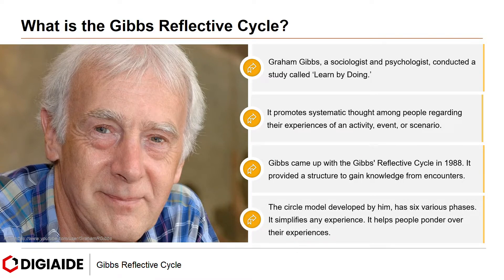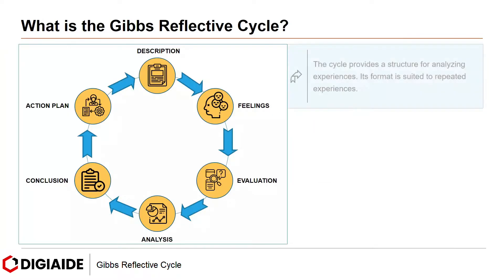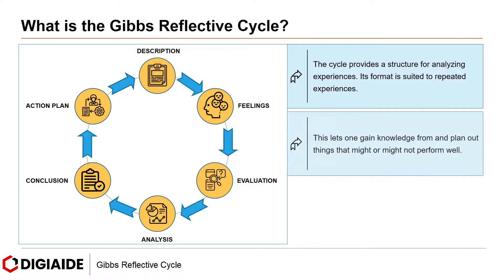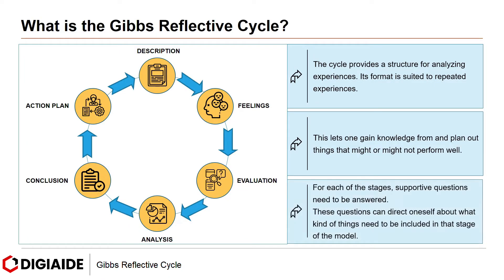The circle model developed by him has six various phases. It simplifies an experience and helps people ponder over their experiences. The cycle provides a structure for analyzing experiences, and its format is suited to repeated experiences. This lets one gain knowledge from and plan out things that might or might not perform well. For each of the steps, supportive questions need to be answered. These questions can direct oneself about what kind of things need to be included in that stage of the model.